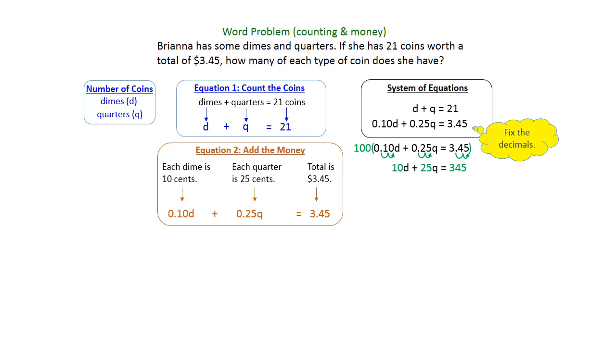So the second equation becomes 10D plus 25Q equals 345. Much easier numbers to work with.